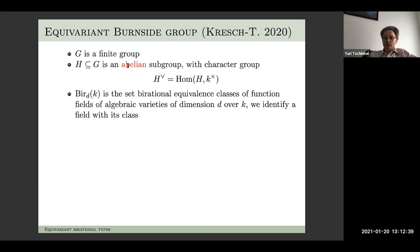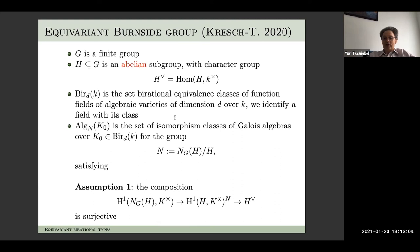Subsequently, Kresch and I generalized this to non-abelian groups. G is a finite group, we look at abelian subgroups of G and their character groups. We look at equivalence classes of function fields of algebraic varieties of some dimension d over our ground field k, and consider isomorphism classes of Galois algebras for the normalizer of the abelian subgroup H in G, quotiented by H.